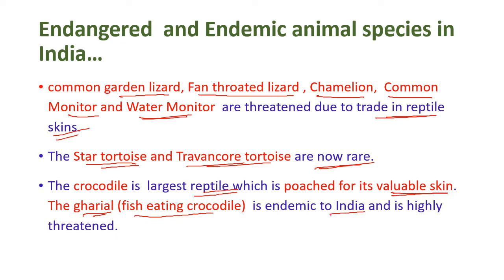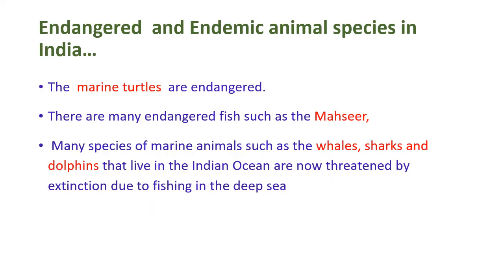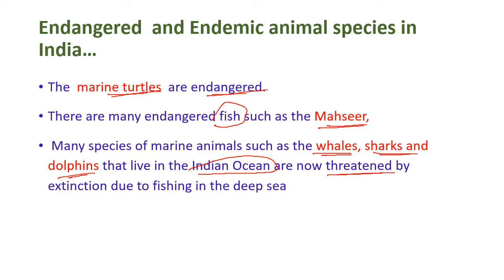The gharial, the fish-eating crocodile, is endemic to India and is highly threatened. Marine turtles are now endangered species. There are many endangered fish such as the mahseer and other species. Many marine animals such as whales, sharks, and dolphins living in the Indian Ocean are now threatened with extinction due to deep-sea fishing activity.